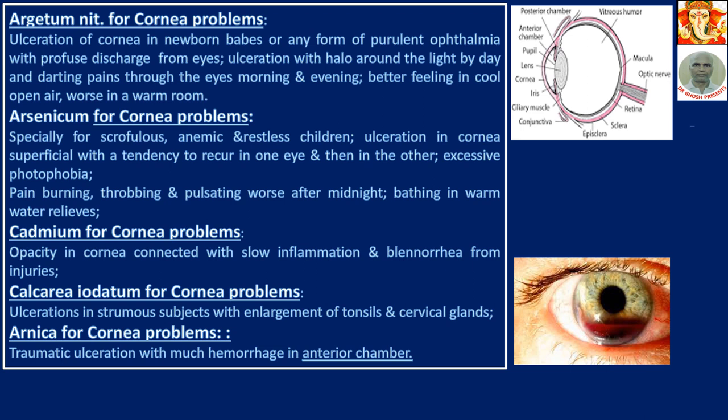Arsenicum for cornea problems: specially for scrofulous, anemic, and restless children. Ulceration in cornea — superficial with a tendency to recur, meaning repeated infection, in one eye then the other. Excessive photophobia, burning, throbbing, pulsating pain — worse after midnight. Washing in warm water relieves. Arsenicum patients have aggravation at midnight, and warm water relieves them.